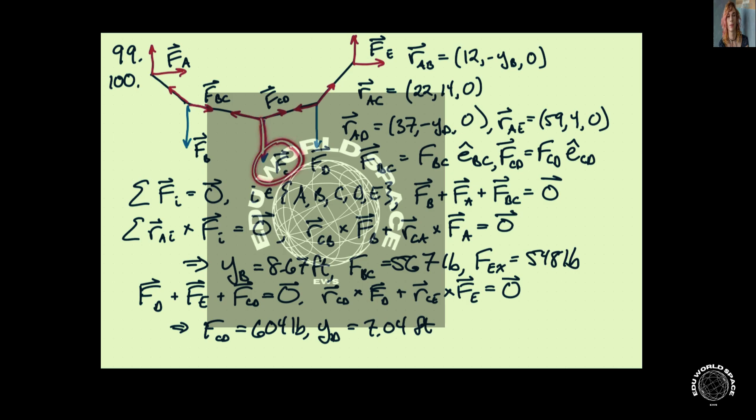We have an unknown component in the horizontal direction or in the vertical direction. And then we would have YB is known. So again, we can crank through the algebra, and once we do that...